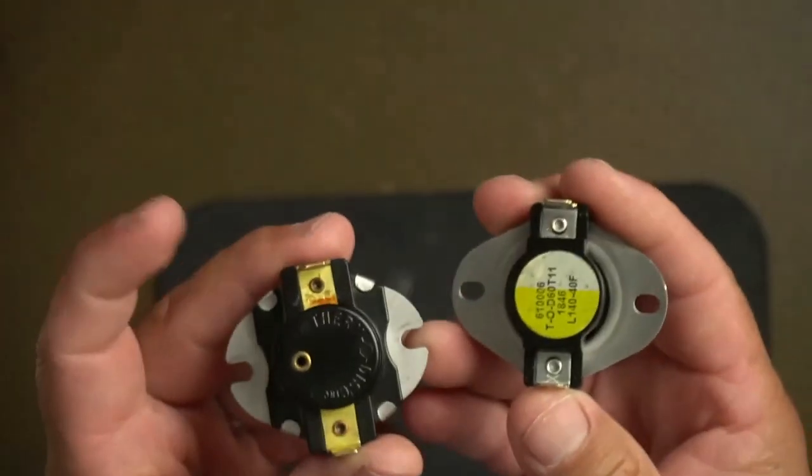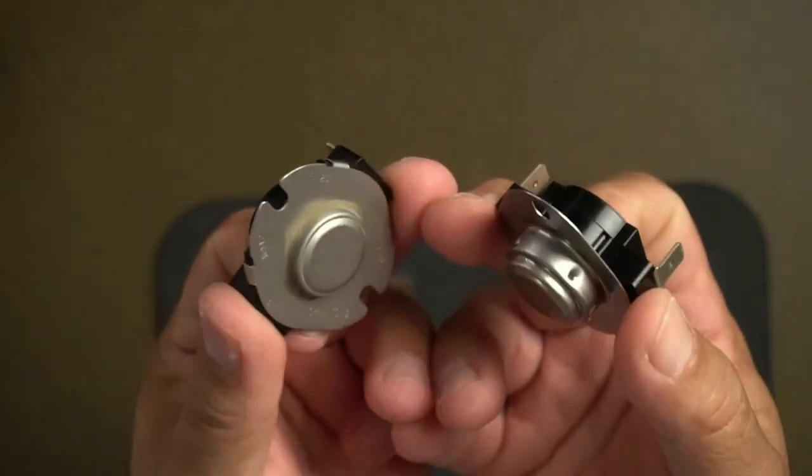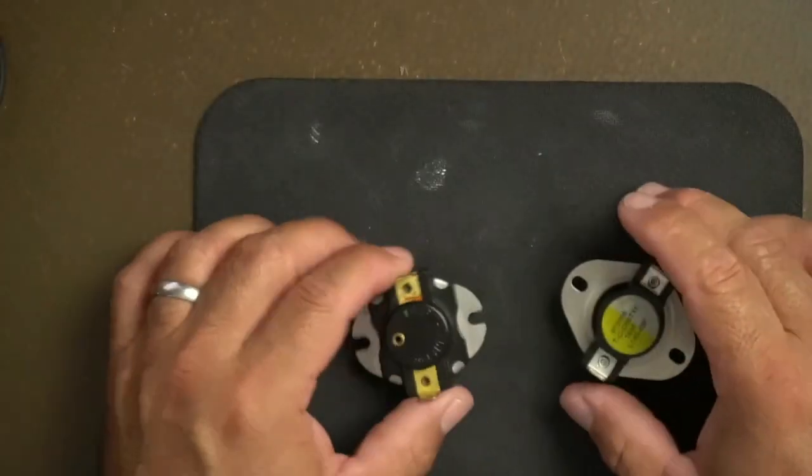Now they both look the same. When you see them, it's really hard to tell what's a limit switch, what's a fan switch, what's the difference, what are they doing, where do you find each one. Now we're going to start with the fan switch.